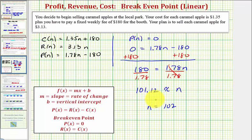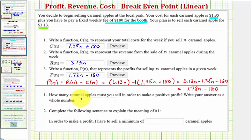So again, going back to our question, how many caramel apples must you sell in order to make a positive profit? You'd have to sell 102. If you sold 101, that'd be below the break-even point and there'd be a loss. So the final question is to complete the sentence, in order to make a profit, I have to sell a minimum of 102 caramel apples. I hope you found this helpful.